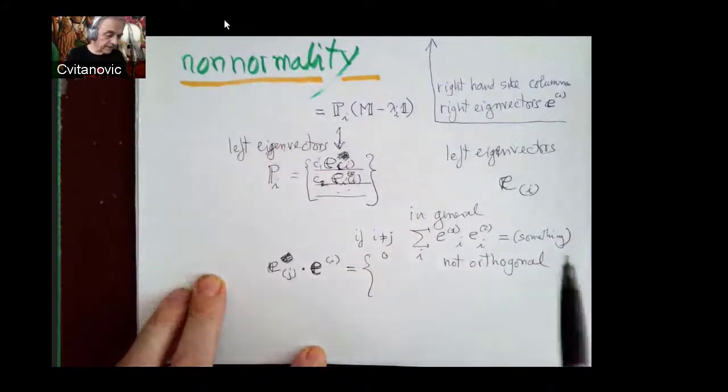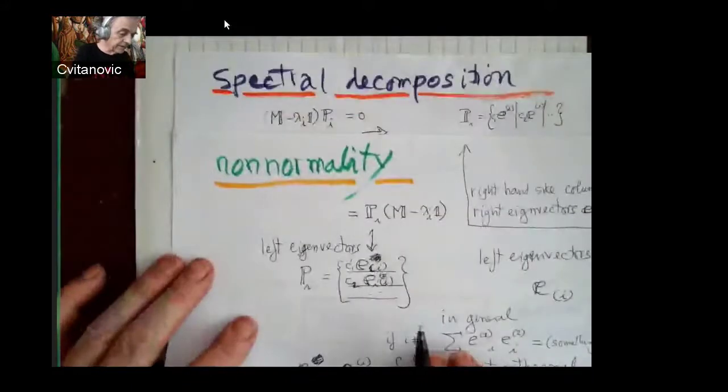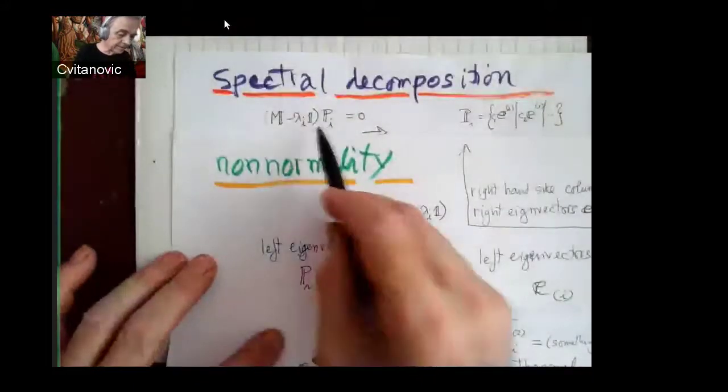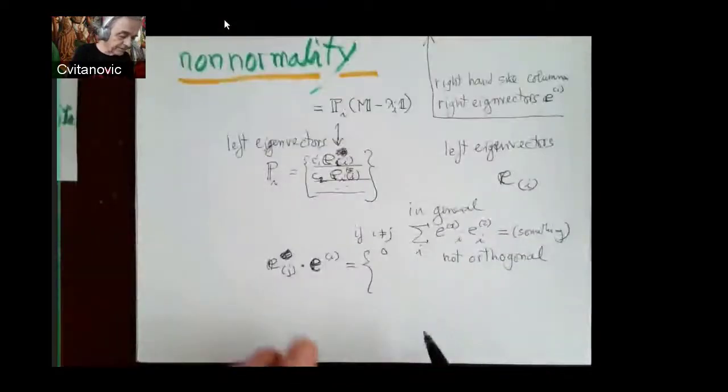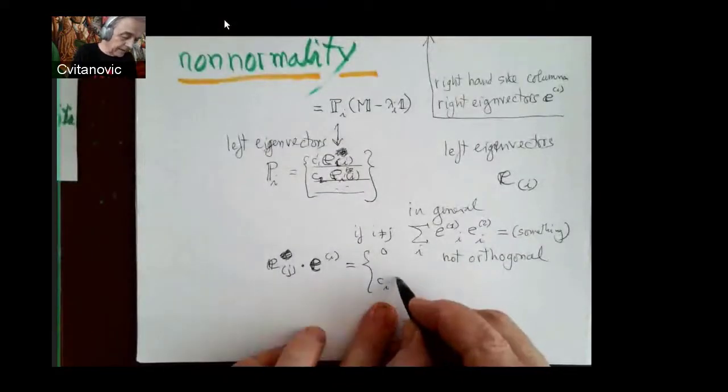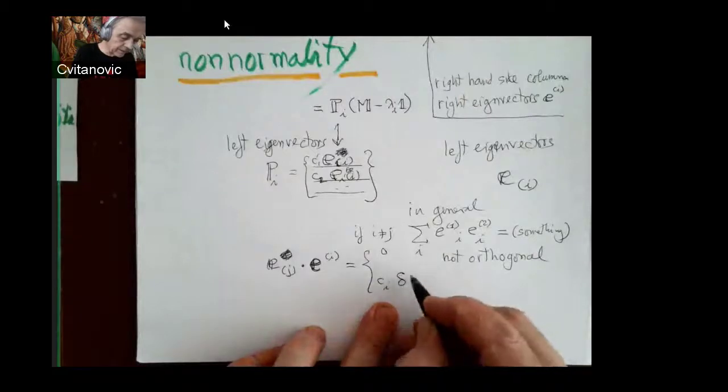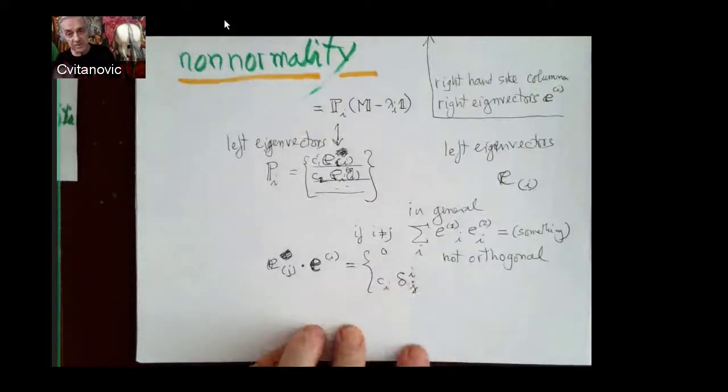And that just comes from the equality of either multiplied on the right or multiplying on the left. Or some constant if i equals j. And that we can write as a Kronecker delta. And in this case, it's natural to distinguish between upper and lower indices.